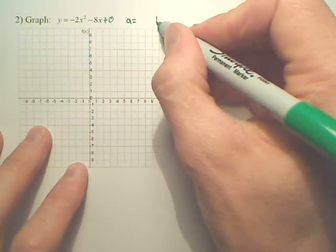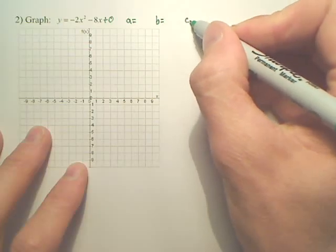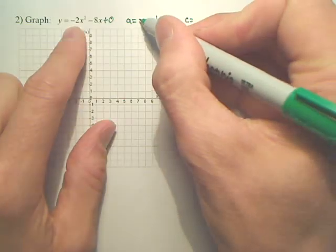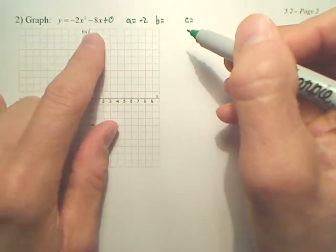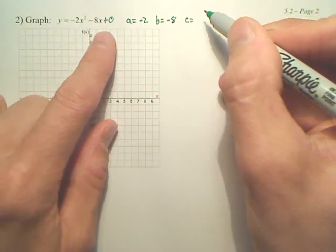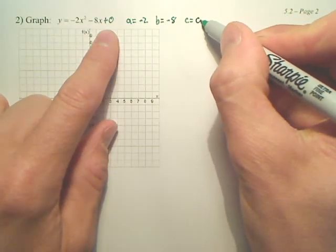Before we start, we need to know our ABCs. Our a is the number in front of x squared, which would be negative 2. Our b is the number in front of x, which would be negative 8, and our c is zero.